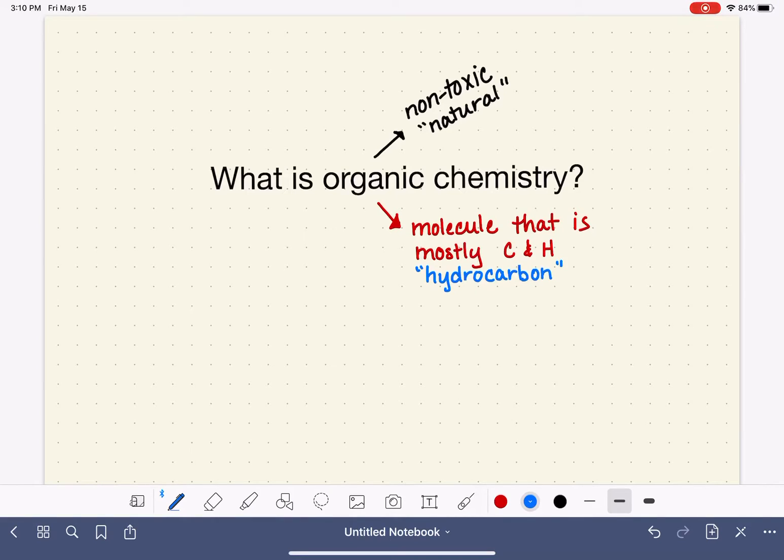And that term, hydrocarbon, should make sense to you because it's coming from the hydrogen and the carbon that are the primary components of the molecule. So organic chemistry is the study of organic molecules in reference to the scientific definition of an organic molecule. It's the study of hydrocarbons or the molecules that are mostly made up of carbon and hydrogen atoms.